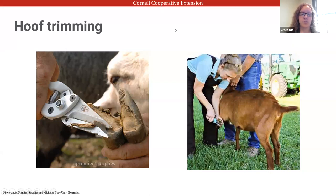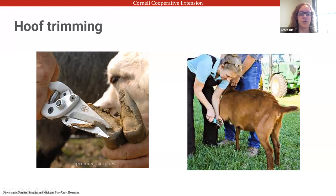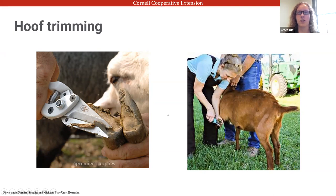Hoof trimming is an important management task — it reduces the chance of lameness as the hoof wall can become overgrown, and while you're working on the feet you can also check for abscesses, foreign objects, or foot rot. The hoof trimmers look like garden shears; similar to trimming a dog's nails, you want to avoid hitting the quick. If you do nick a blood vessel, use antiseptic or iodine to prevent infection.